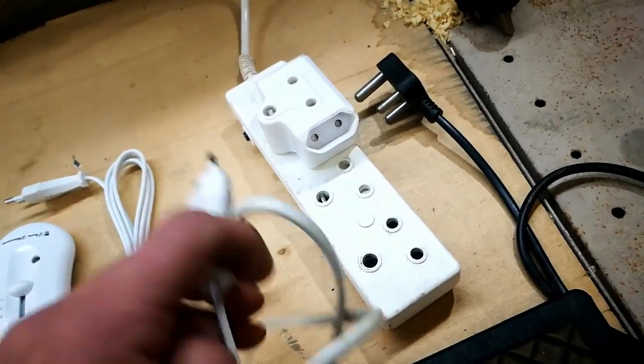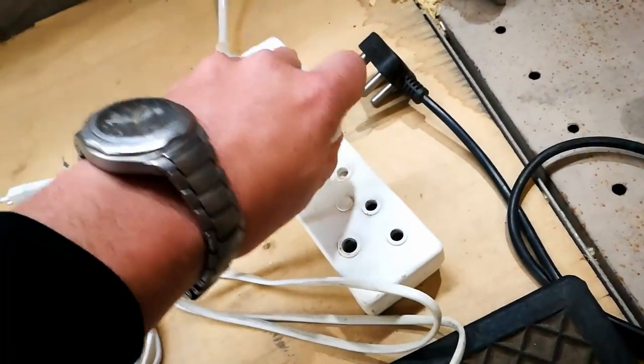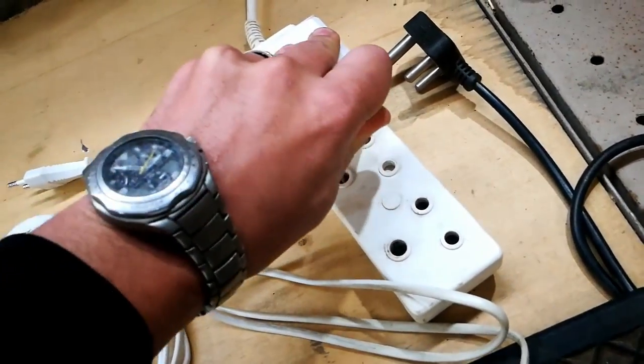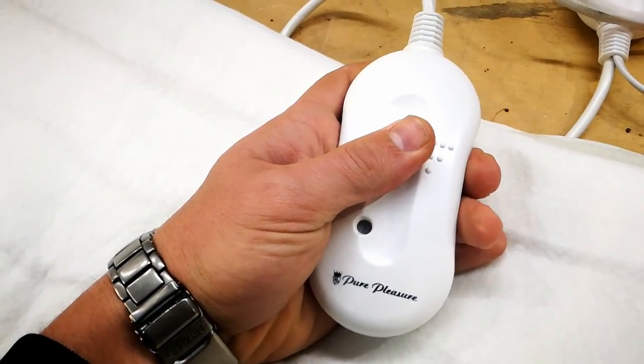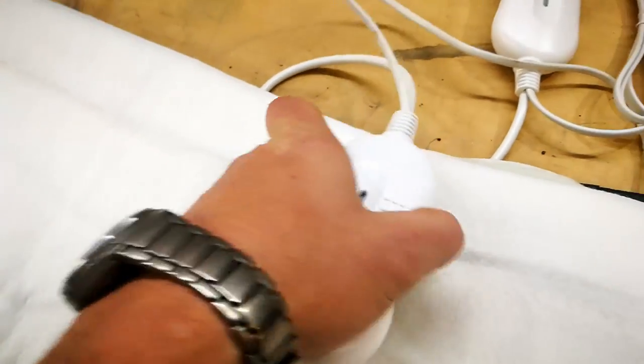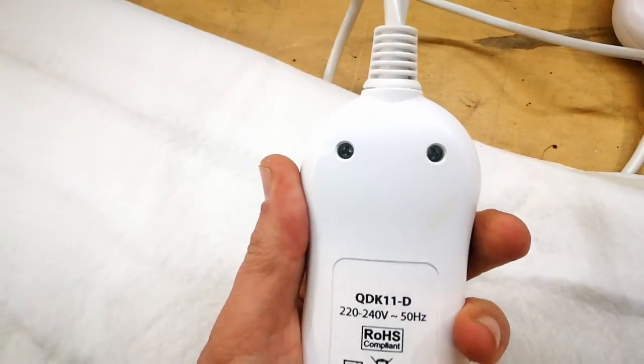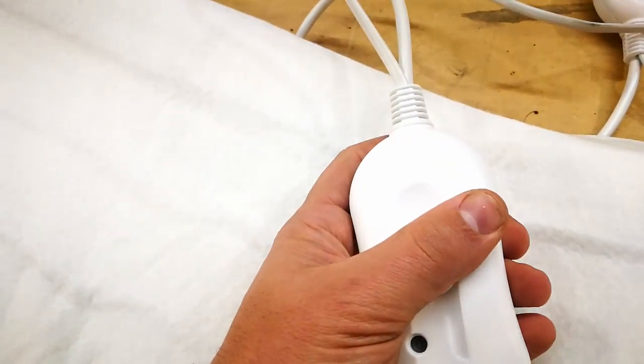If we do the same for the other side, switch it on, no light. So we're going to open the control module and see what we can see inside.